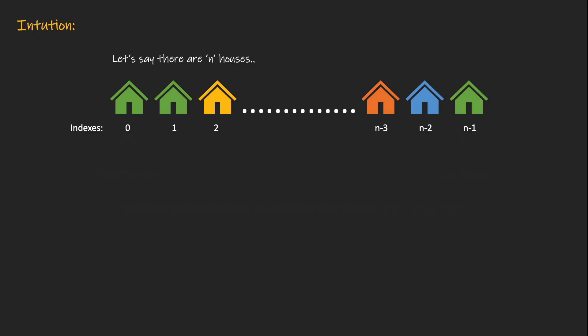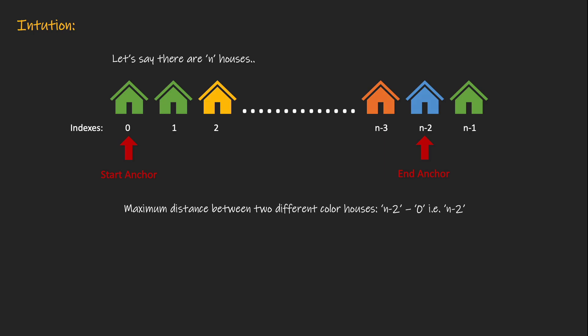Let's take another example. We again start from the two edges, but this time the colors are the same, so we try to move inwards. If we move inward from the right hand side, we see a different color — not so from the left hand side. So we move inward from the right. Now we have encountered two different colors, so we return and say the maximum distance is n-2 minus 0, that is n-2.